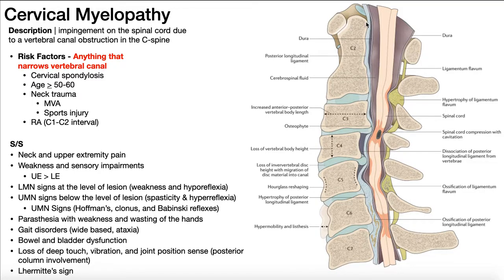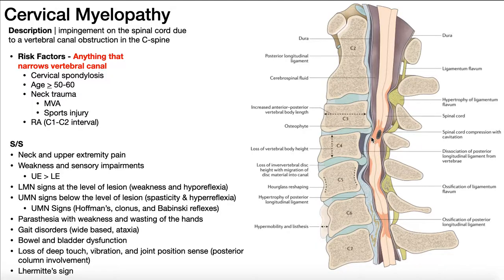On the posterior surface of these vertebral bodies we have the posterior longitudinal ligament, or the PLL. Down here you actually see hypertrophy of that posterior longitudinal ligament — it's taking up more space than it ought to and producing some compression on the spinal cord. Here you see ossification of that same ligament. In this area the PLL has become dissociated from the C4 vertebral body — it's protruding posteriorly and producing some compression on the spinal cord.